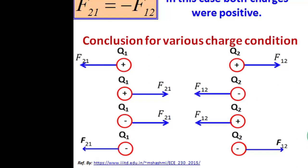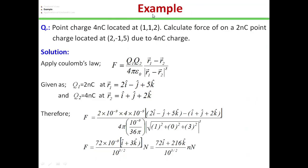If the charges are of opposite sign — one positive and one negative — the two charges attract each other. Now let's take an example to understand the force of one charge on another. In this question, a point charge of 4nC is located at position (1, 1, 2), and we must calculate the force on a 2nC point charge located at (2, −1, 5) due to the 4nC charge.